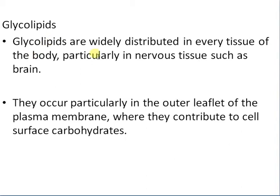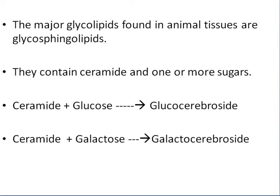Glycolipids are widely distributed in every tissue of the body, particularly in nervous tissues such as the brain. They occur particularly in the outer leaflet of the plasma membrane, where they contribute to cell surface carbohydrates. The major glycolipids found in animal tissues are glycosphingolipids, which contain ceramide and one or more sugars.